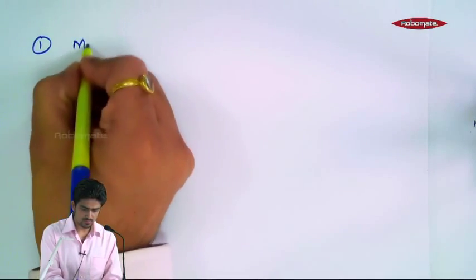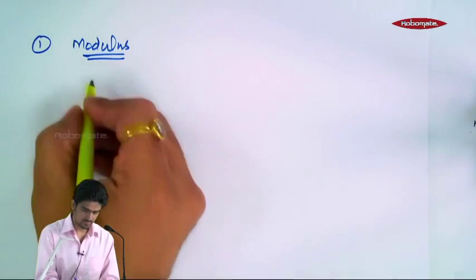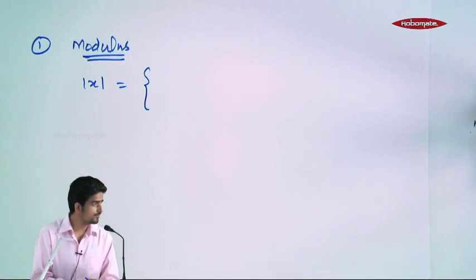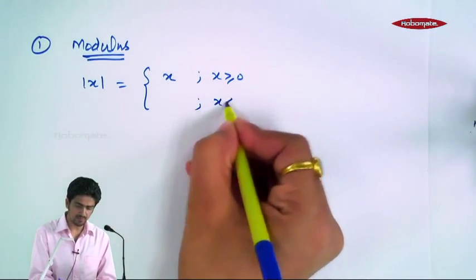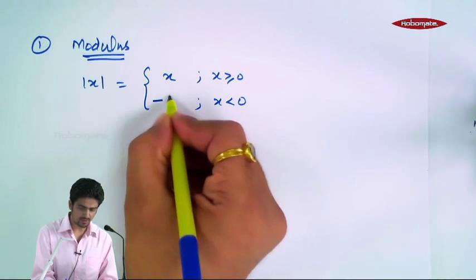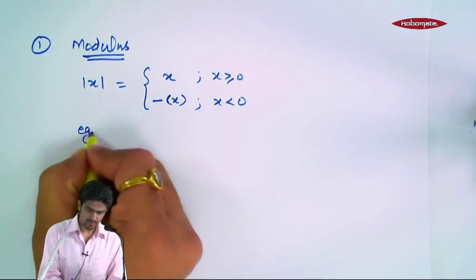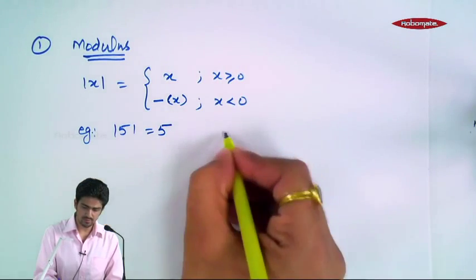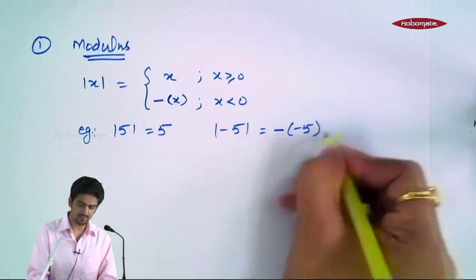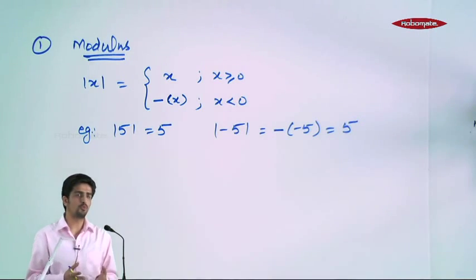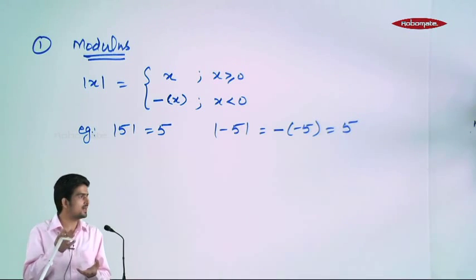Pehla standard function tha Modulus Function. Definition kuch is tarah se thi: agar aap ek positive input denge to output wahi aegi, aur agar negative input denge to output will be minus of that input. For example, mod of 5 is 5. Mod of minus 5 — kyunki minus 5 negative hai — output will be minus of minus 5, yaani ki 5. So anyhow, output jo aegi wo positive aegi. Agar pehle se positive thi to as such, agar pehle se negative hai to ek minus aur lag jayega aur cheez positive ho jayegi.